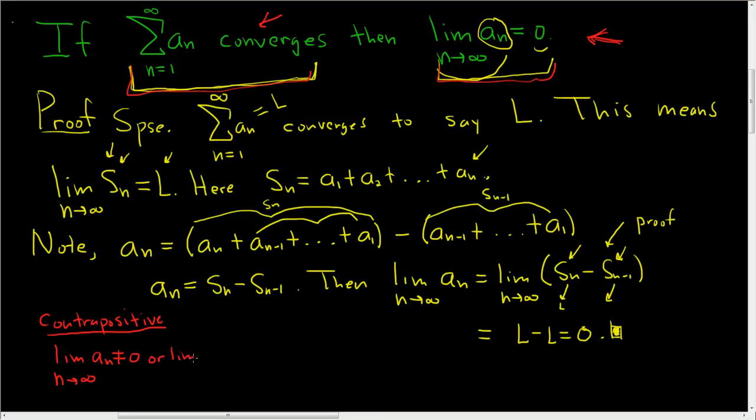Or the limit as n approaches infinity of a sub n does not exist. So if this happens, then this does not happen. So it will be diverges. So a sub n diverges.